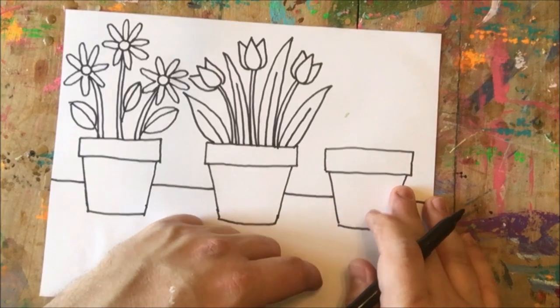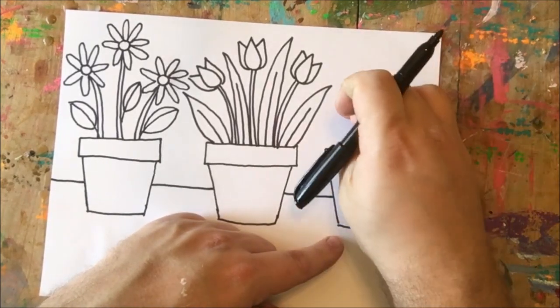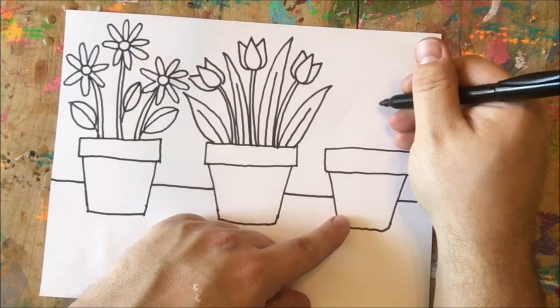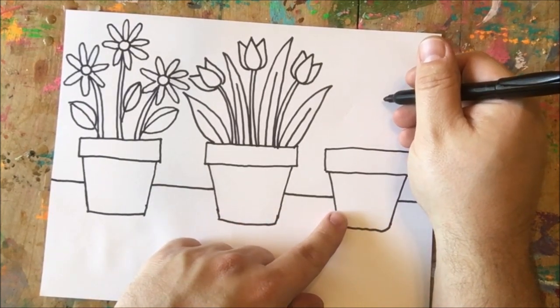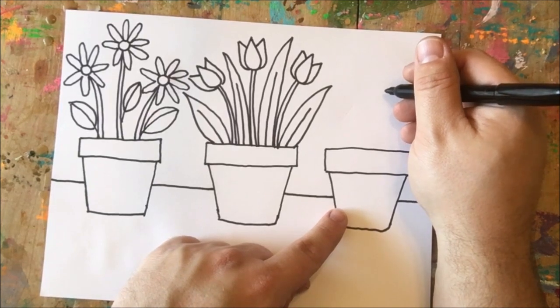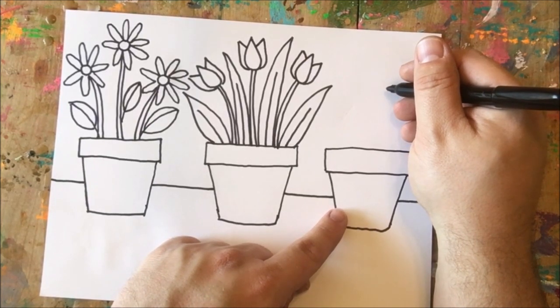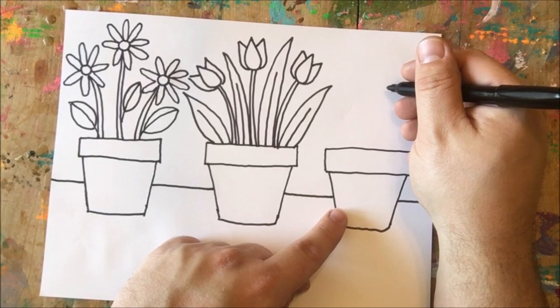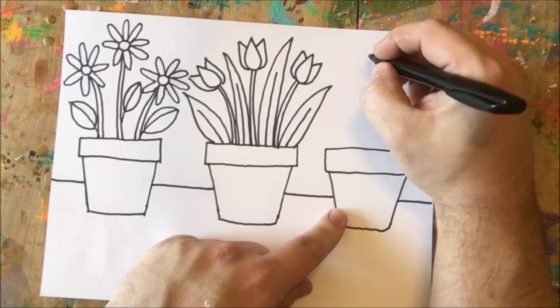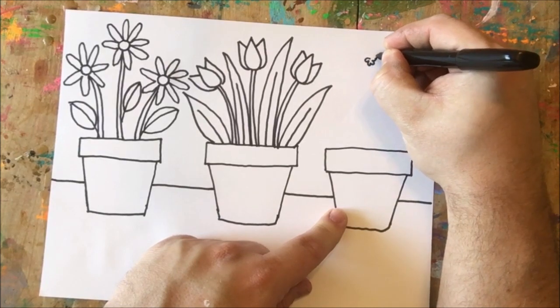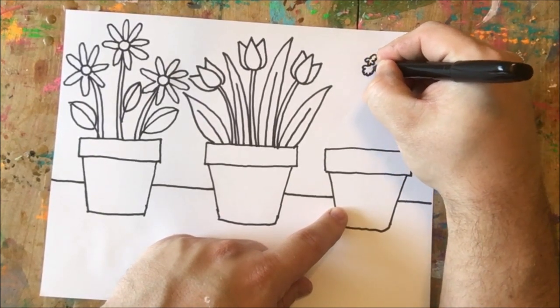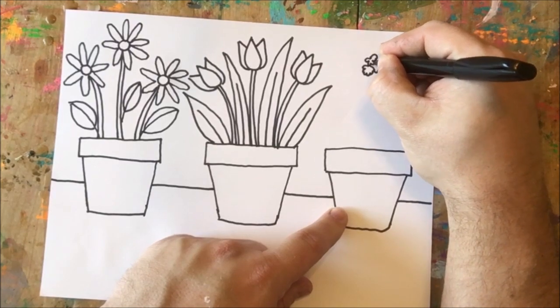For our last pot we're gonna draw another kind of flower. This is a kind of flower that I used to see a lot in my mom's garden when I was growing up. I don't exactly know the name of it, but it's kind of a fun flower and it reminded me of grapes because the flowers were purple and they all kind of grew in clumps. So I'm gonna start by just adding a little flower like this up at top, and then I'm gonna add two flowers down below like that.